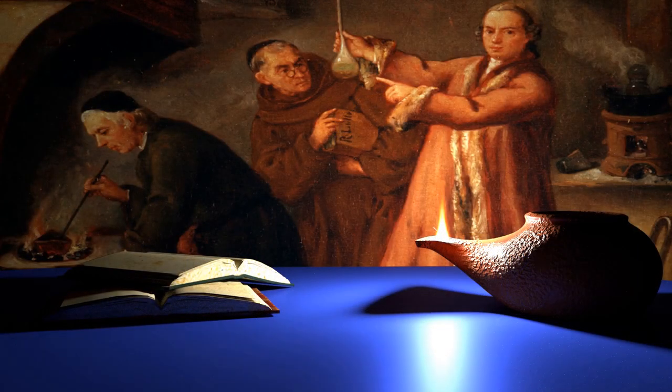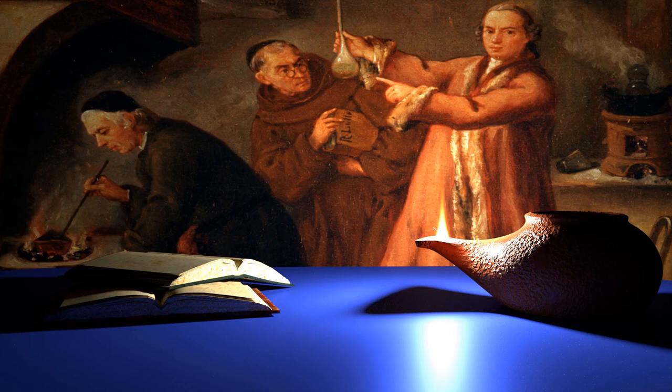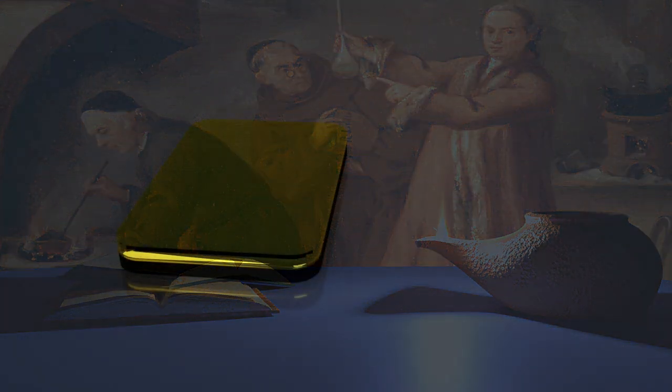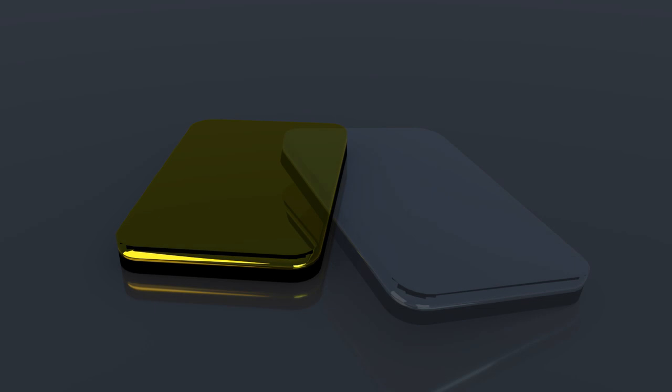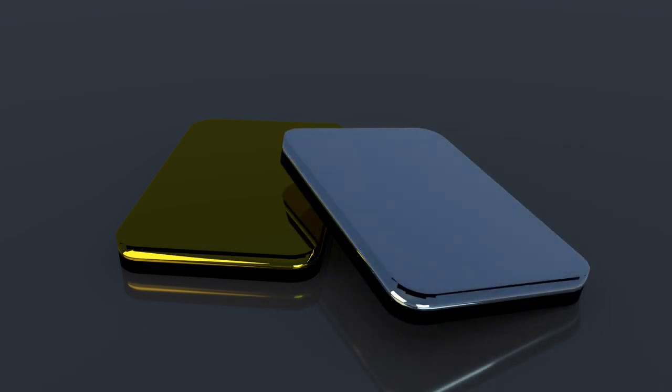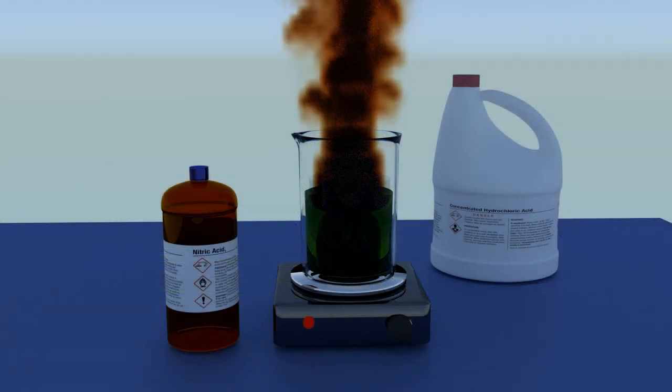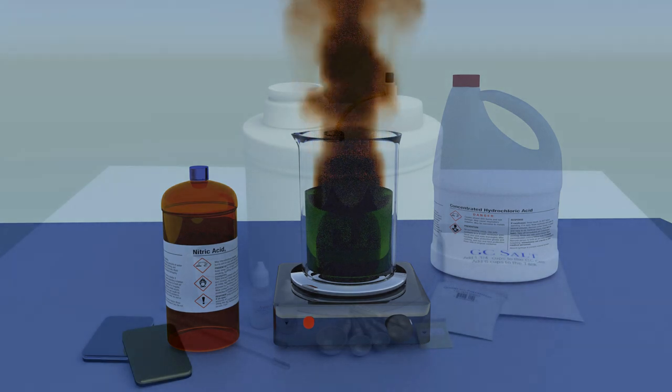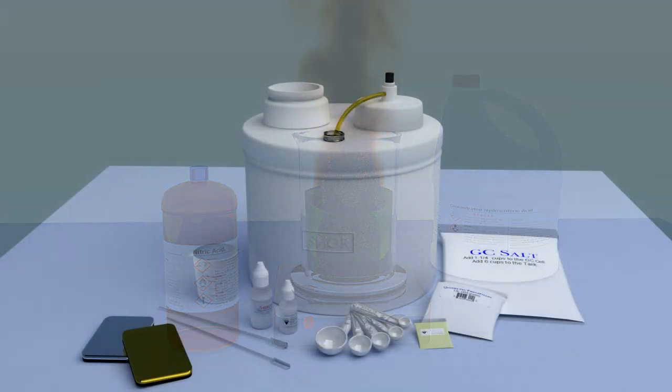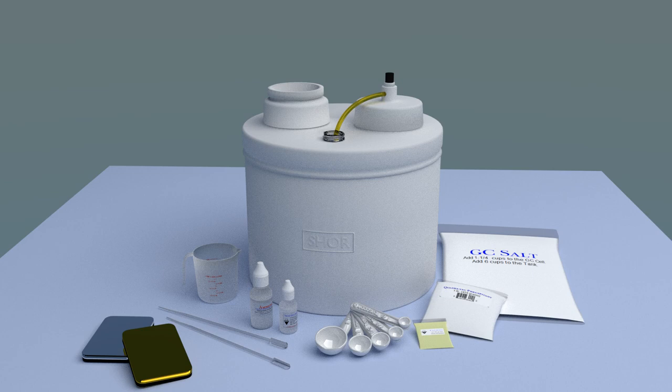Since ancient times, mankind has been refining precious metals - gold, and then more recently, platinum group metals. For centuries, the refining has always been done with highly corrosive acids. Now however, you can refine your gold and platinum group metals to very high purity with the Simplicity Refining Process. This process utilizes salt water and electricity, rather than harsh acids to refine the metal.